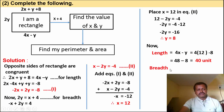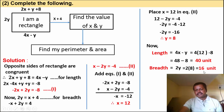Now find breadth. Breadth equals 2y. Putting y equal to 8: 2 into 8 equals 16 units. So breadth is 16 units.